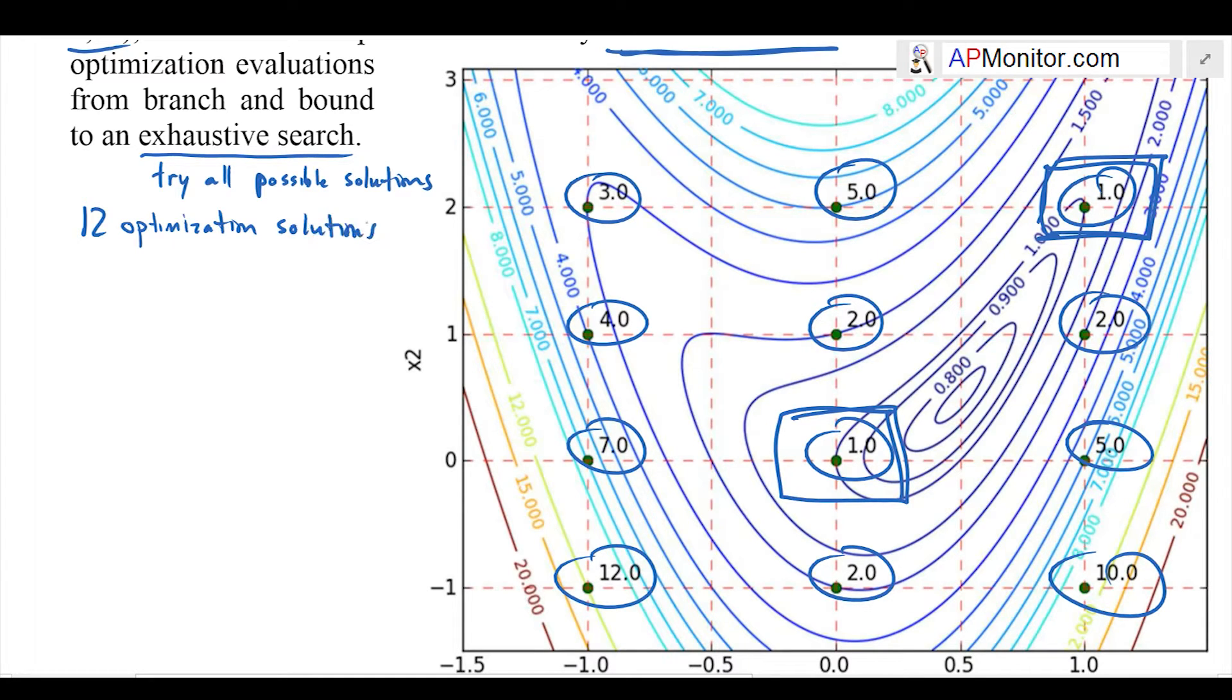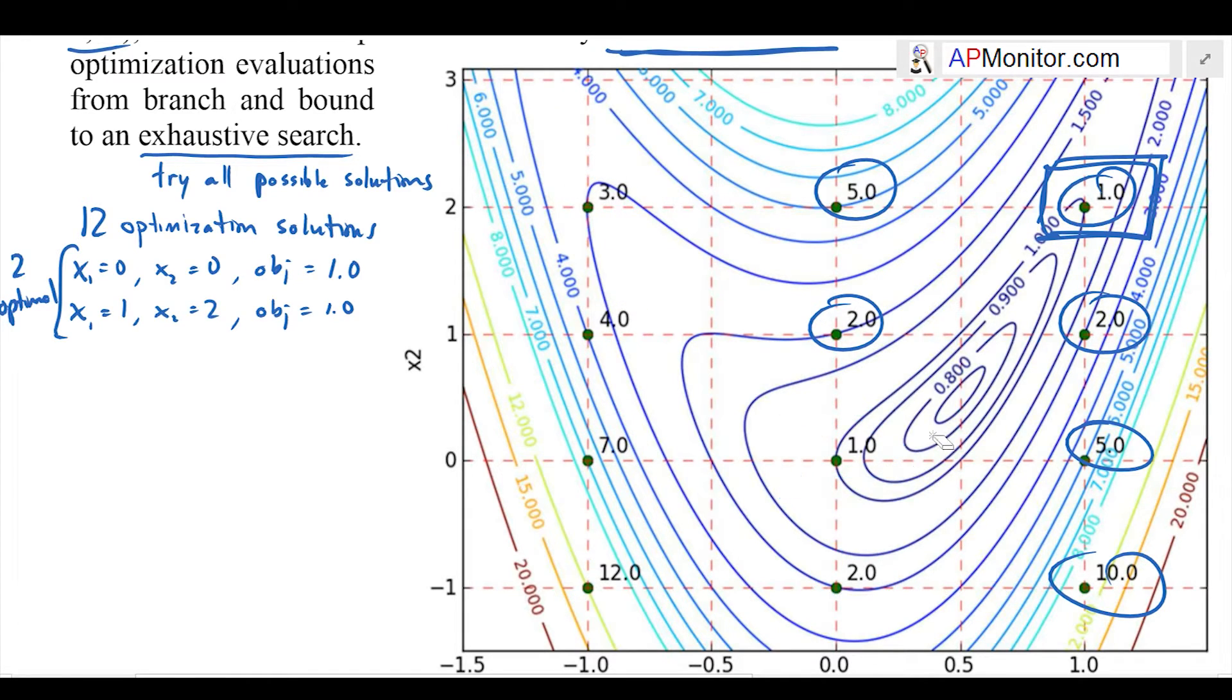I've put a square around the ones that are optimal. There's actually two optimal solutions. I had to interrogate this solution at 12 different points and I had two optimal solutions. Now we're going to go with branch and bound instead.